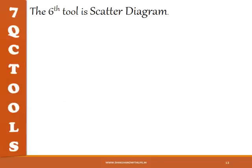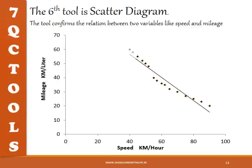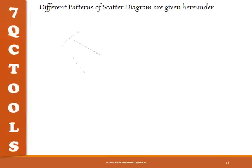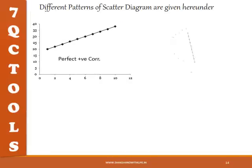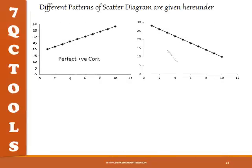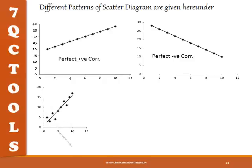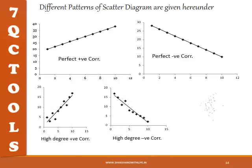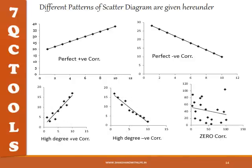The sixth tool is scatter diagram. This tool confirms the correlation between two variables, like speed and mileage. Different patterns of scatter diagram include: perfect positive correlation, perfect negative correlation, high degree positive correlation, high degree negative correlation, and zero correlation.